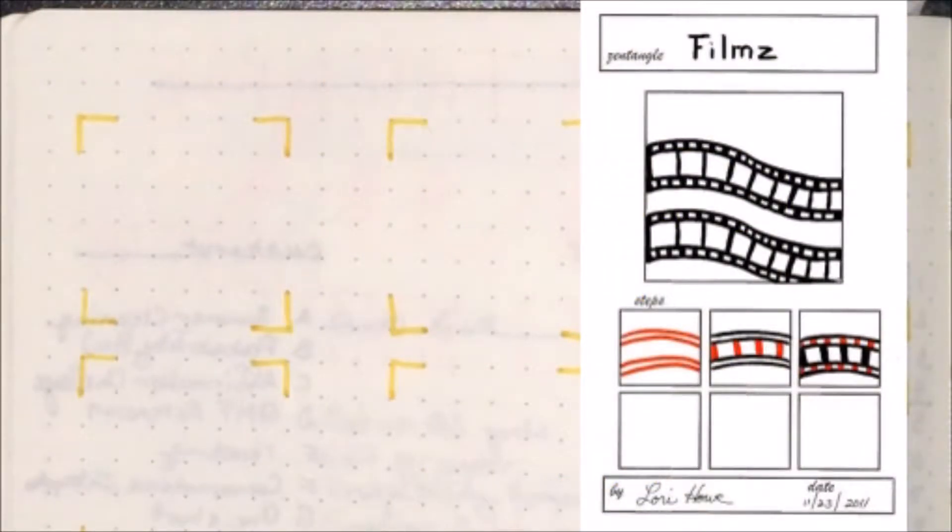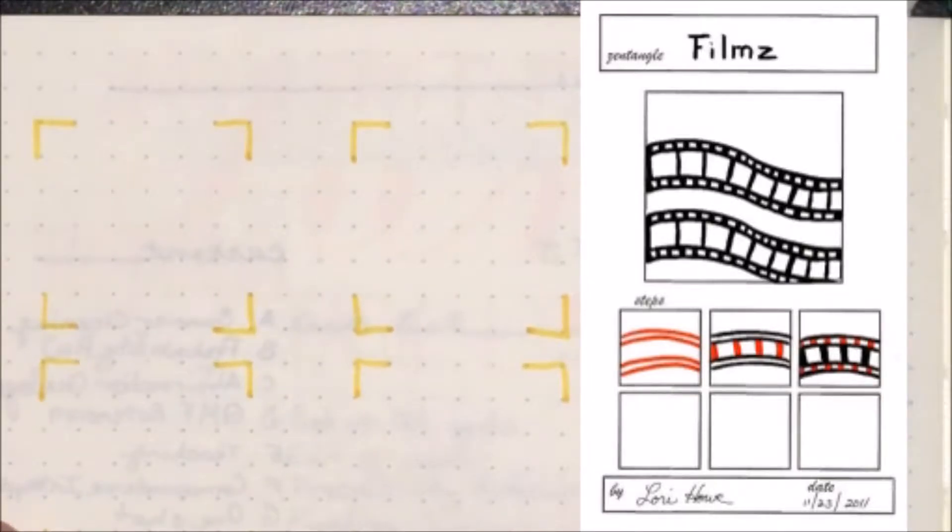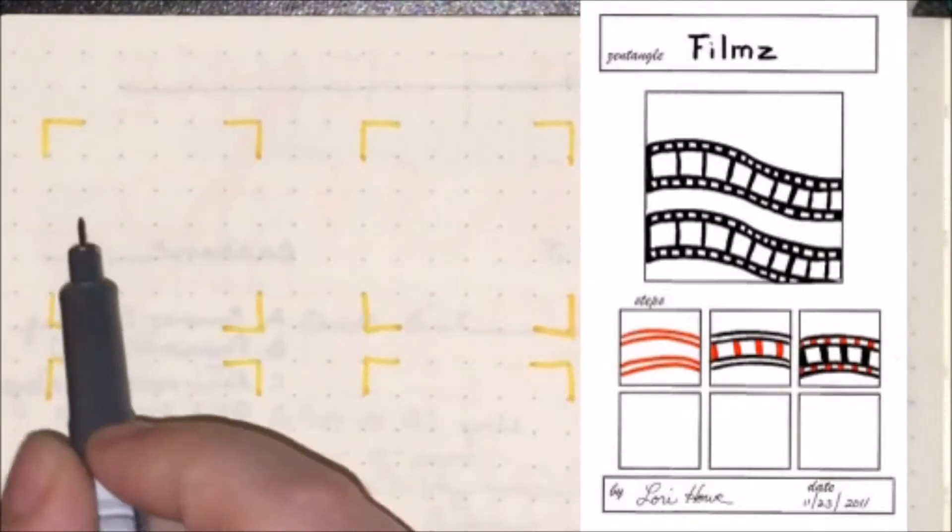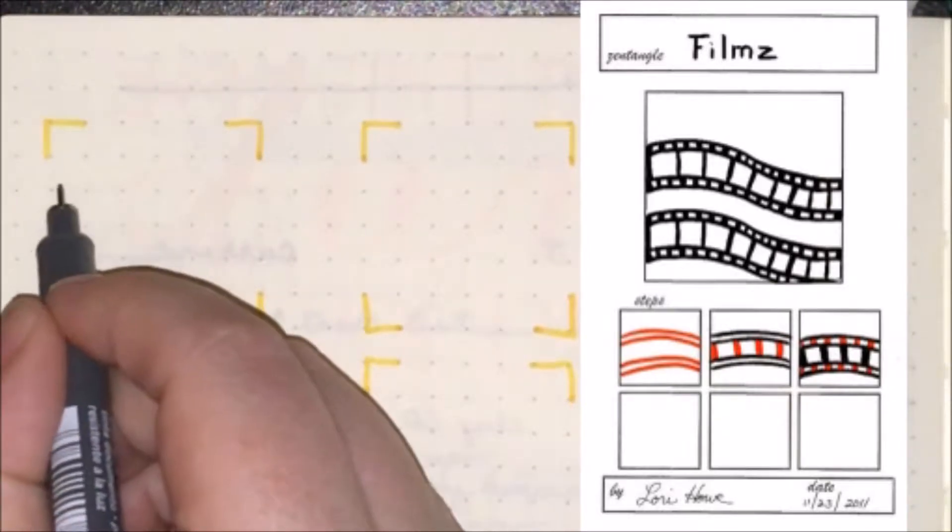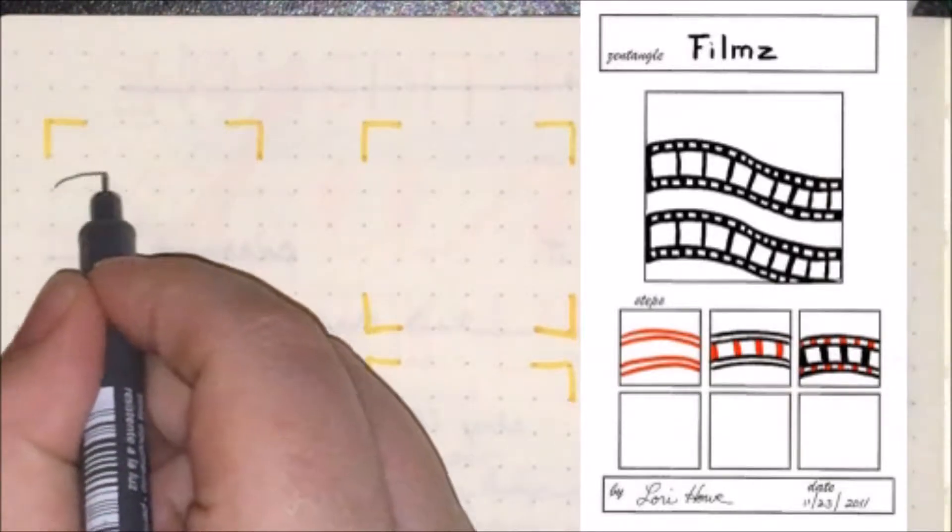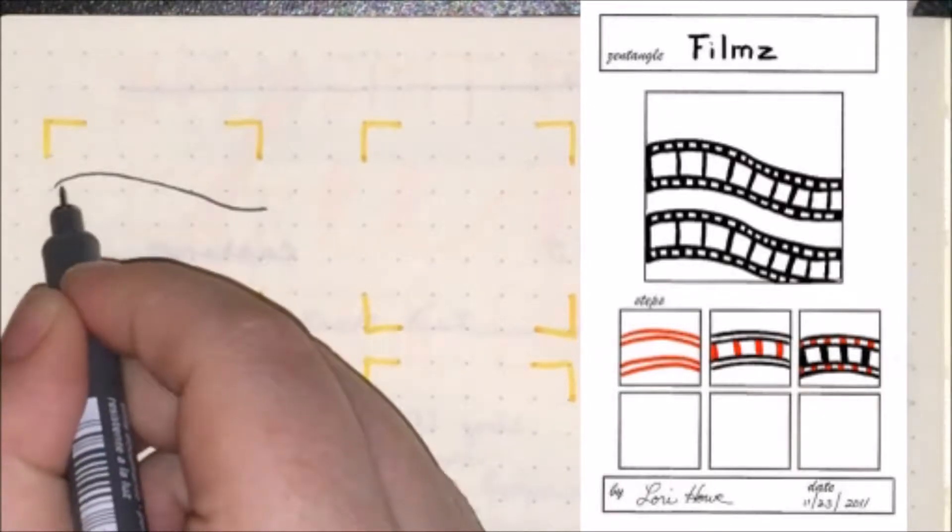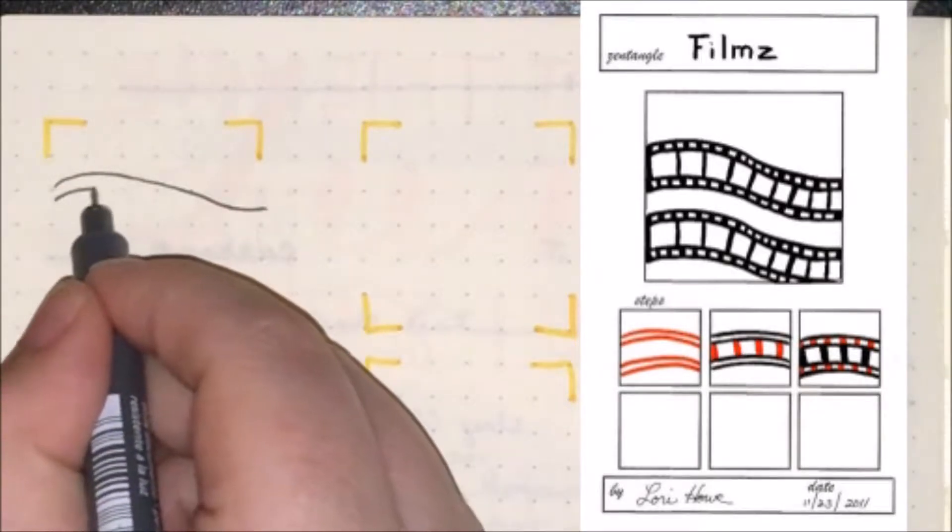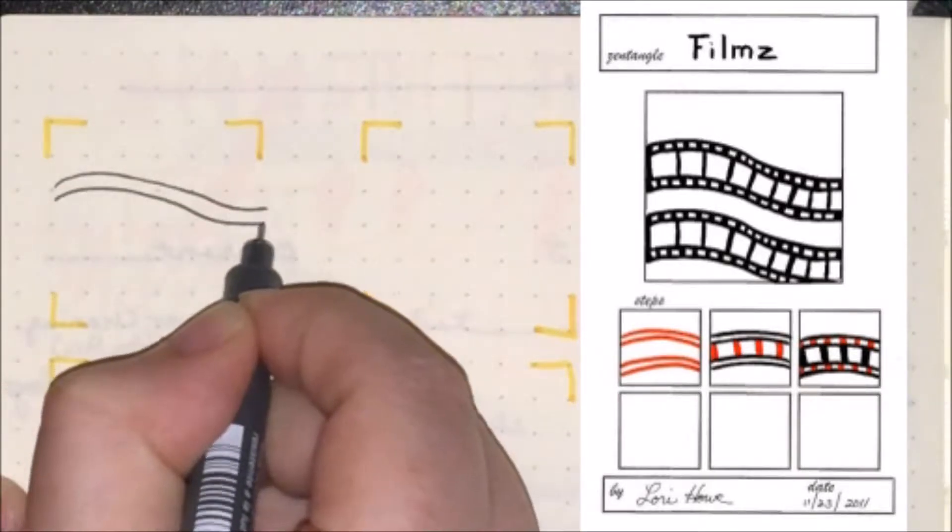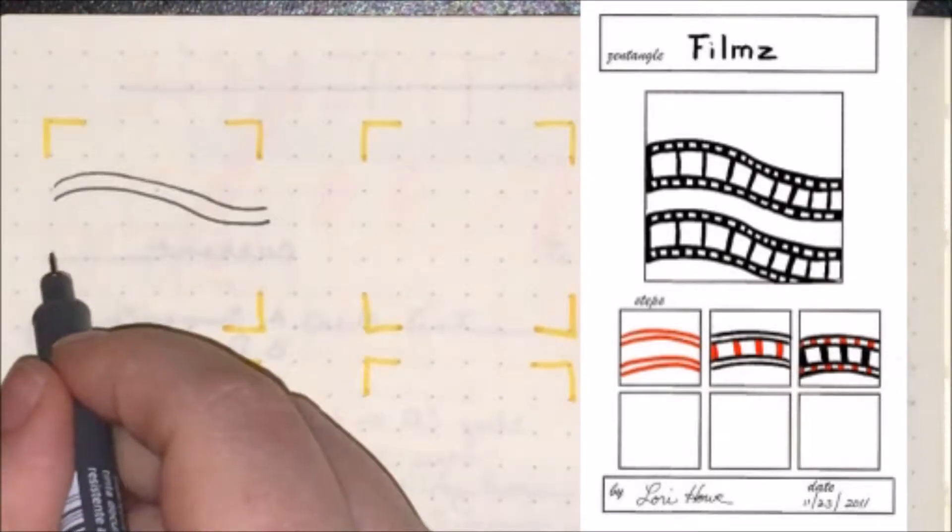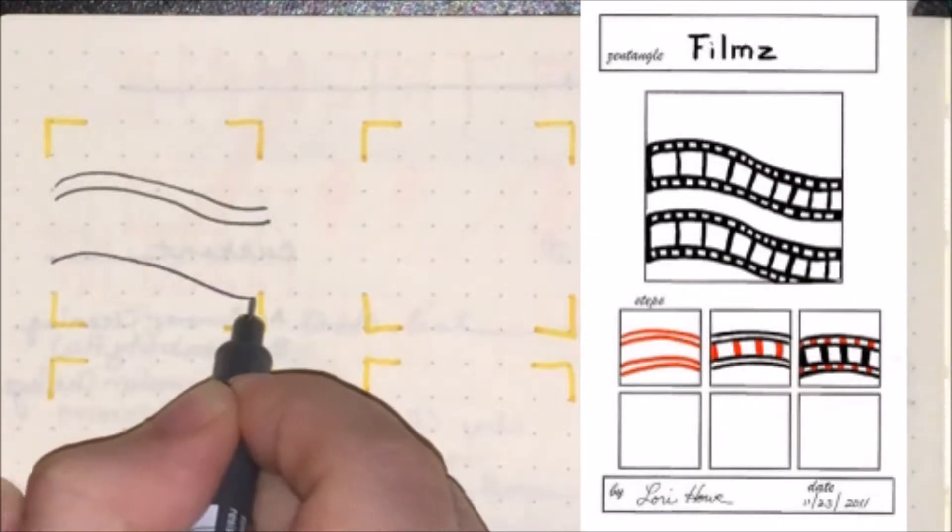Films, and it's by Lori Howe. The way you get started with this is you're going to create a couple lines or curves that are all in line with each other, and you want pairs of them to be close to each other, but you want the other pair of lines to have a little bit of separation away.